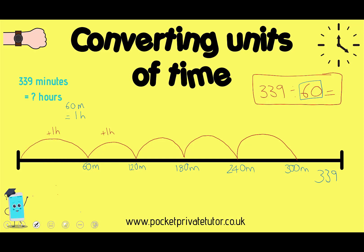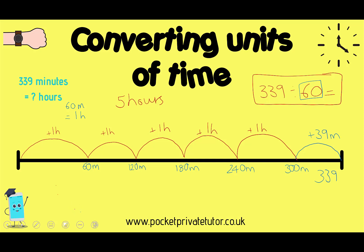I'm going to label at the top that I've added 1 hour, 1 hour, 1 hour — counting up to 5 hours. I can't do 6 hours because that would go too far. From 300 minutes to 339 minutes, there are 39 spare minutes. So my answer is 5 hours and 39 minutes — 339 minutes equals 5 hours and 39 minutes.